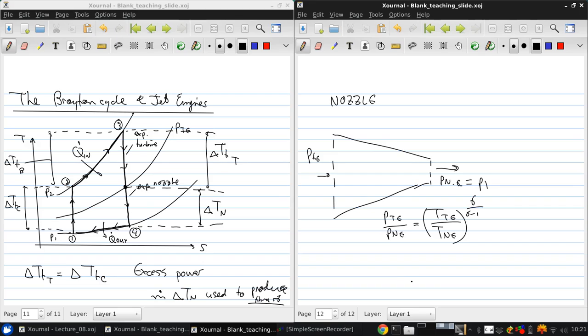Now, if we neglect the kinetic energy coming into the nozzle so that PTE and TTE can be taken to be stagnation quantities, then we can write PTE over PNE equals 1 plus gamma minus 1 over 2 times the Mach number at nozzle exit squared. And since we can determine this pressure based on the work required to do the compression and we know that the nozzle exit pressure is equal to the ambient pressure, we can get the nozzle exit Mach number.